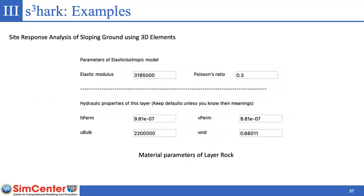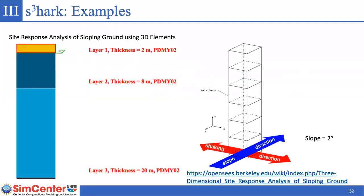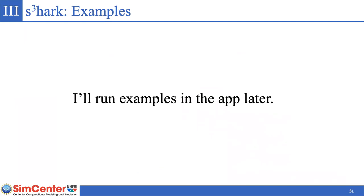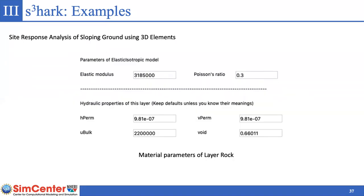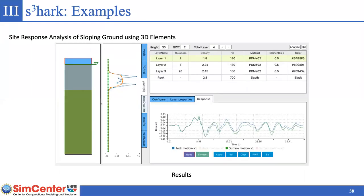The rock properties are also defined — mainly the density and shear wave velocity are used to calculate the rock parameters for the dashpot. When the analysis is finished, a visualization of the results is presented. Different material parameters can be defined for each layer using the PDMY02 model.